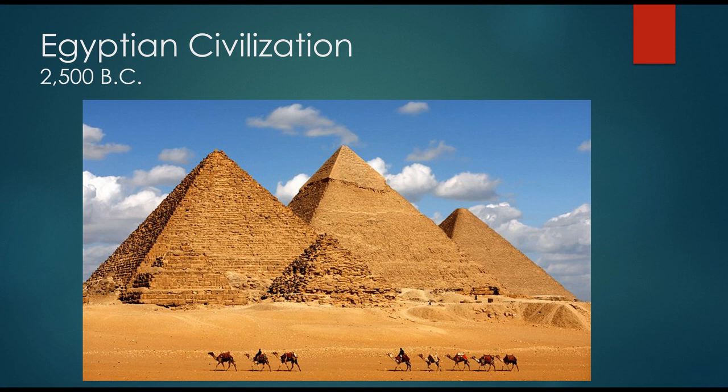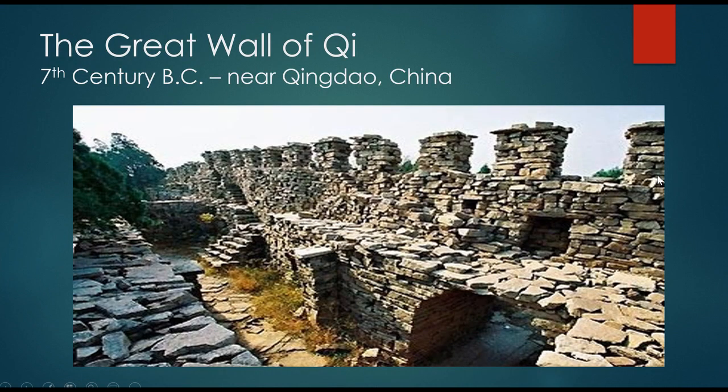Around 2500 BC, we started getting forms of concrete even in the Egyptian civilization. The pyramids, while they were mostly block, did have some sort of concrete coating over the outside. Again, this is not modern concrete — it's more of a grouted mixture — but it did kind of serve the purpose.